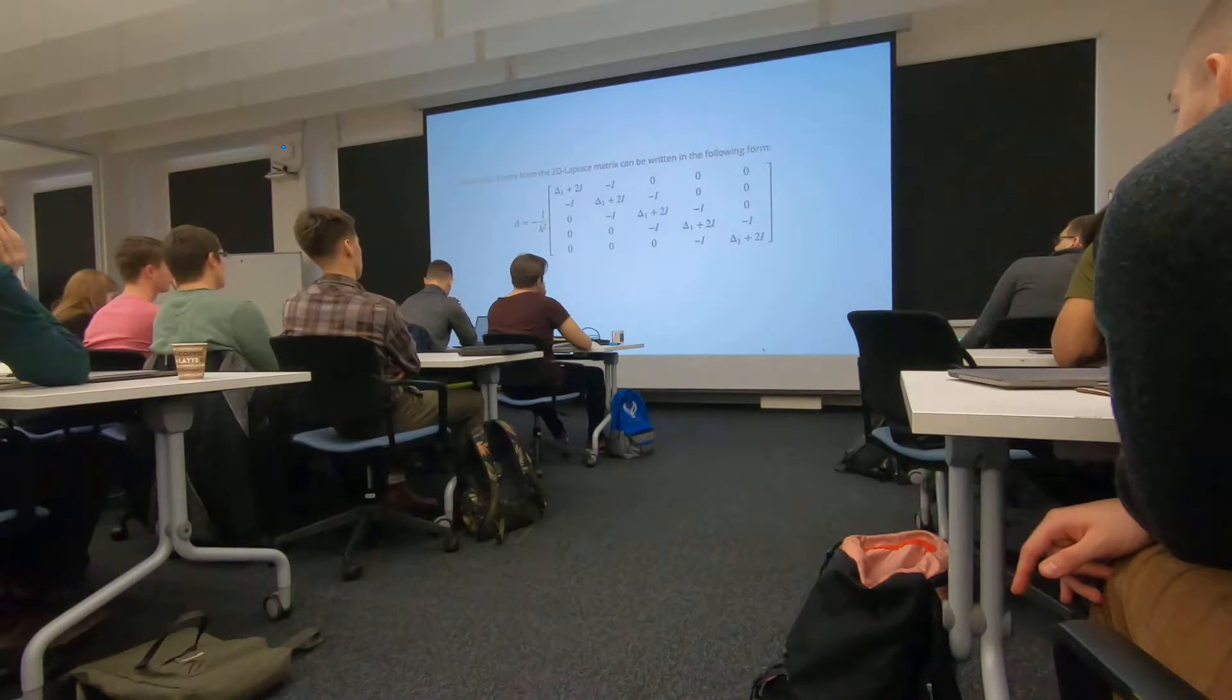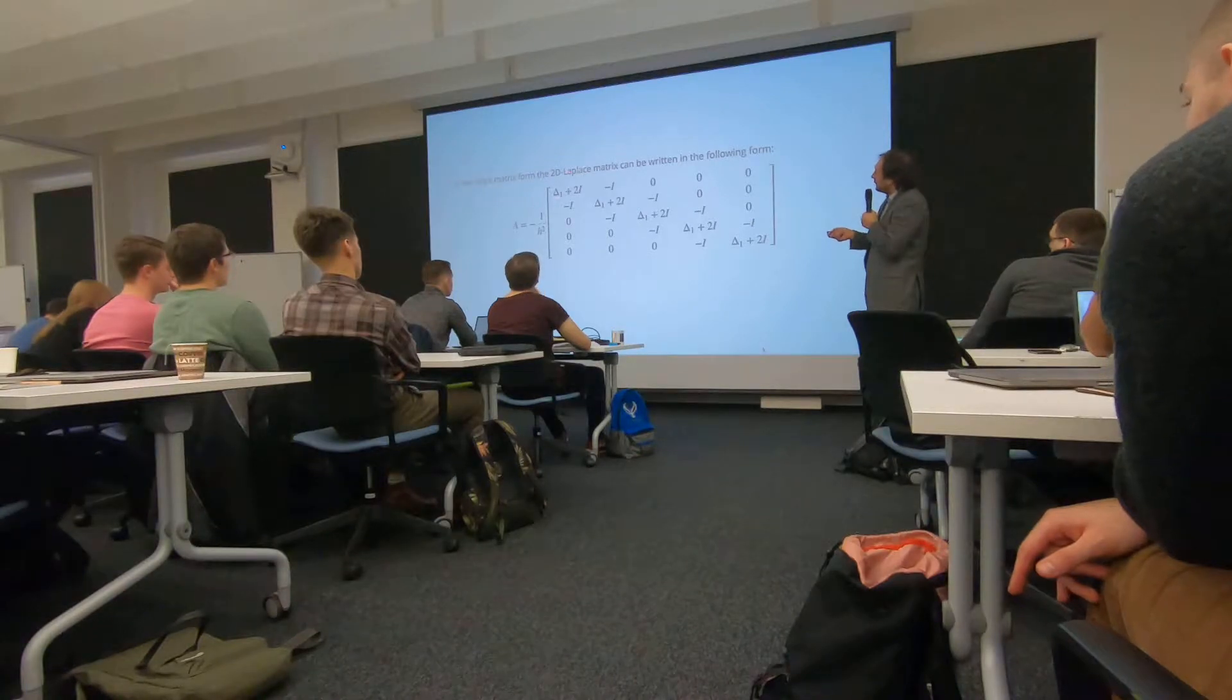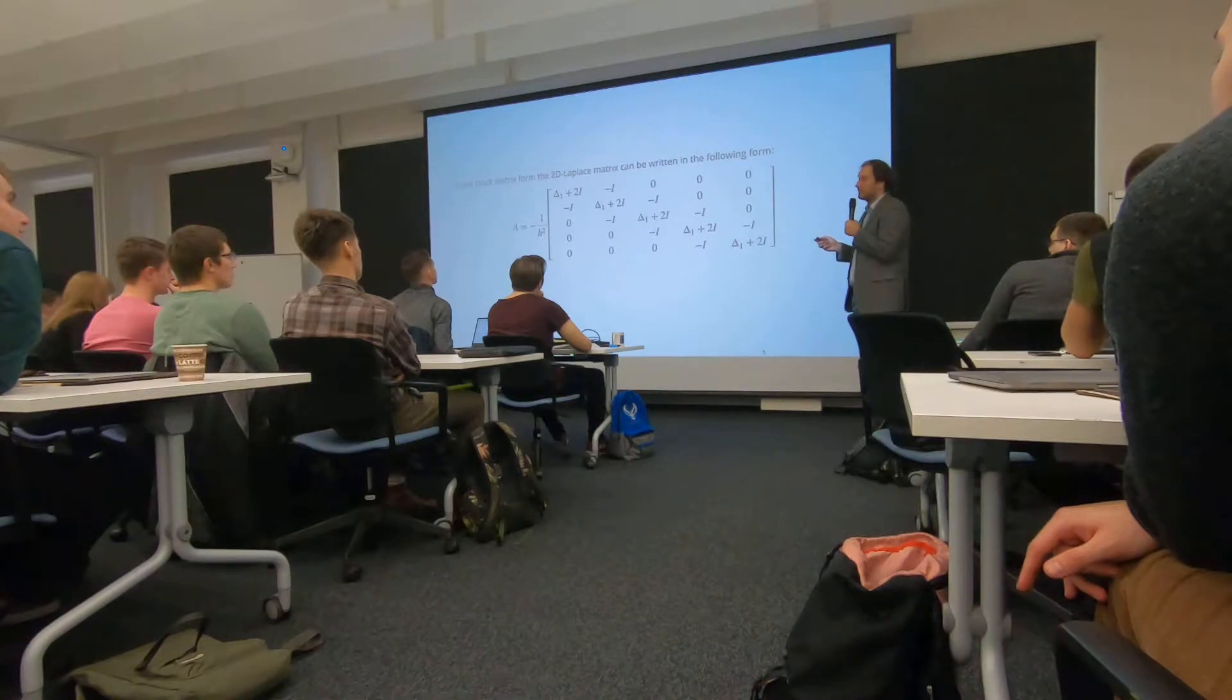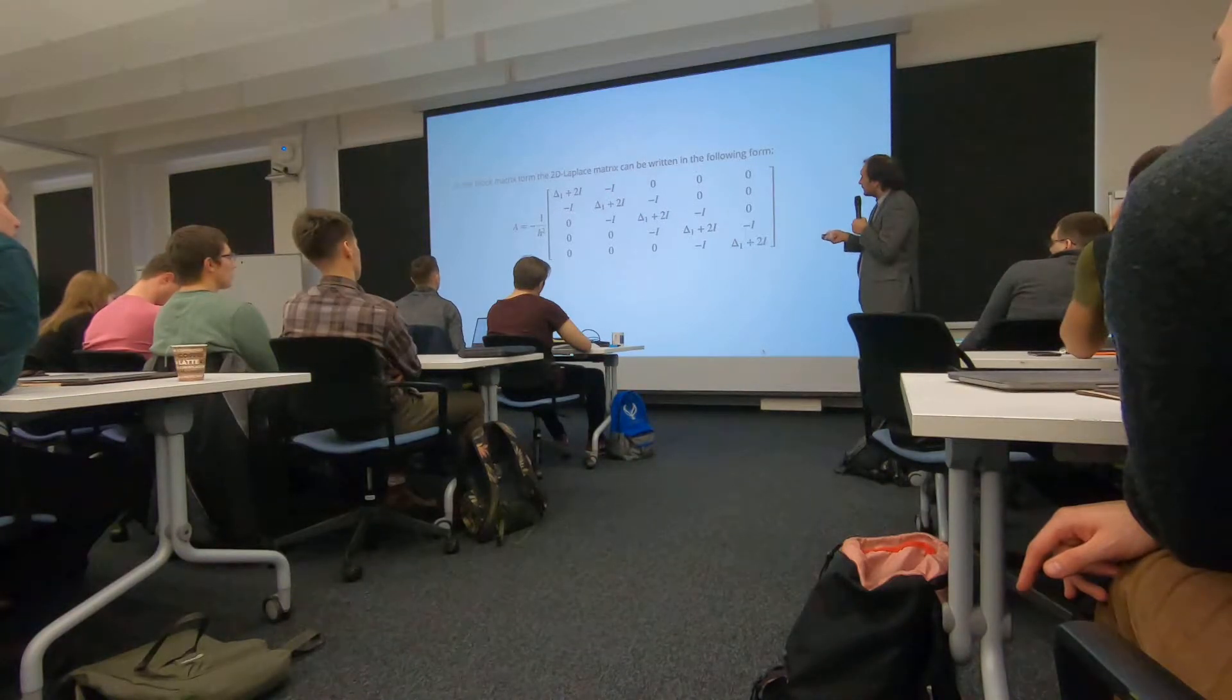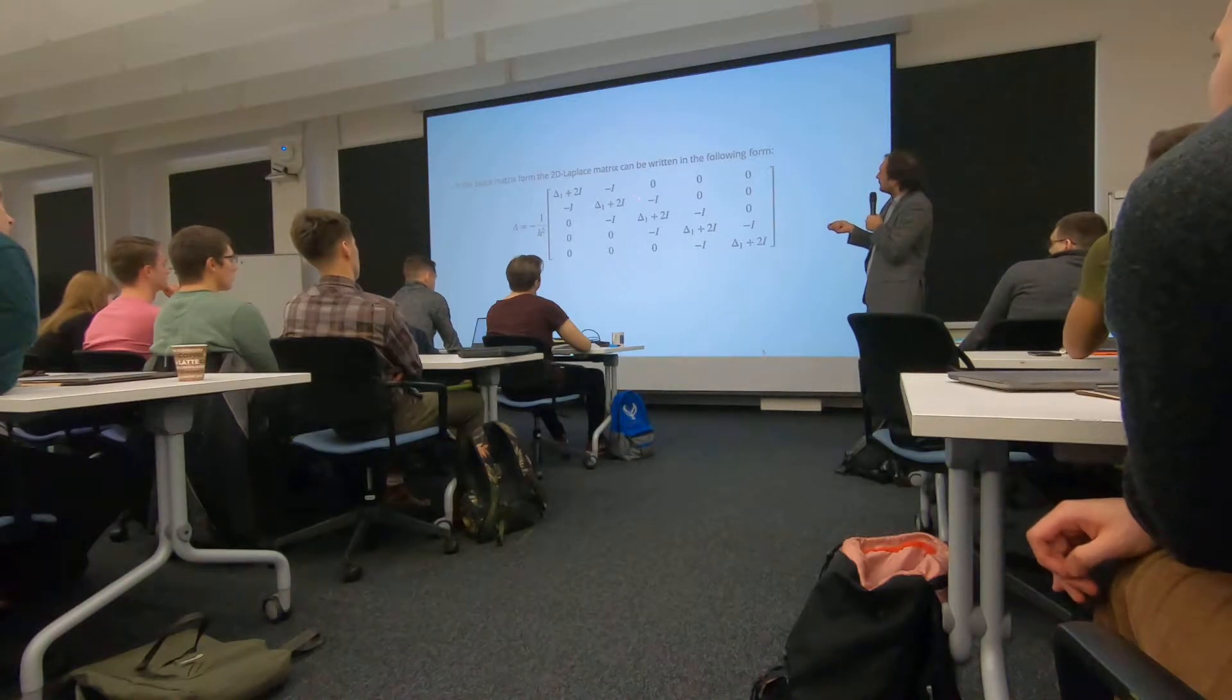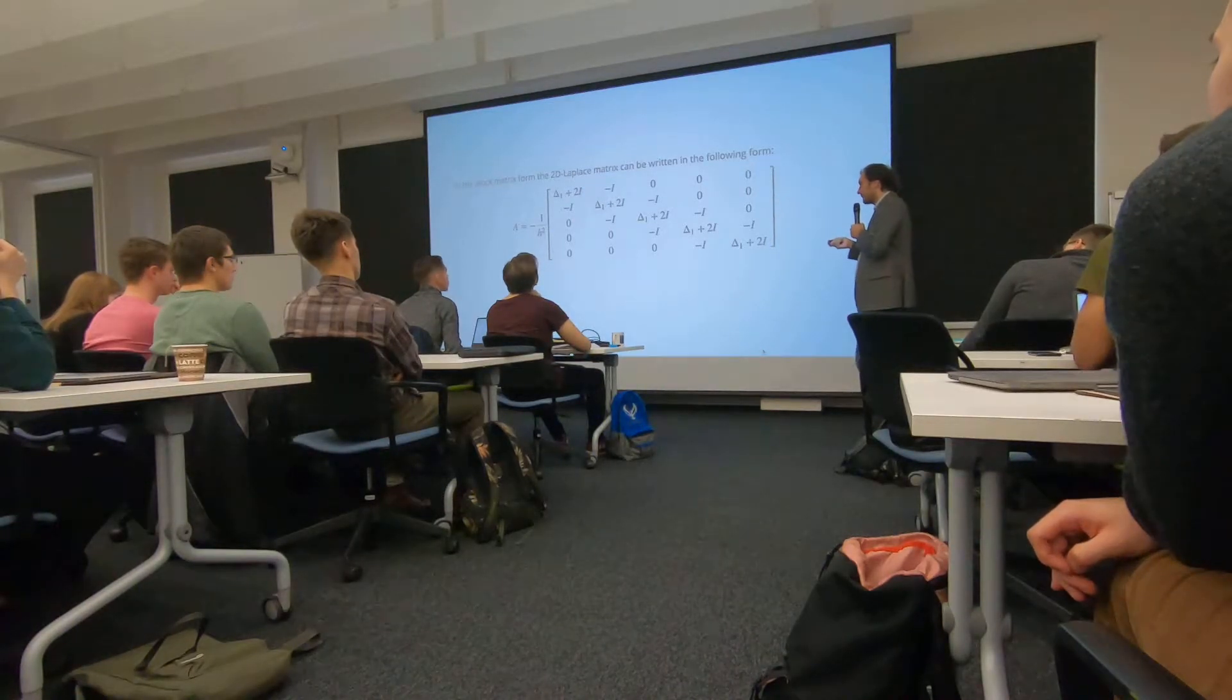In block form, it has this structure. This is so-called block tridiagonal matrix. Each block is also tridiagonal. Seems like a nice structure. Sometimes people say this is a five diagonal matrix. But it is not. There are three diagonals here, one diagonal here, one diagonal here. Okay, five diagonals. But there is a gap. There's a lot of zeros between these three main diagonals and this diagonal. This gap increases when you increase the number of blocks or increase the block size.